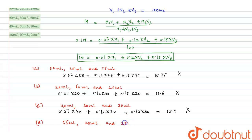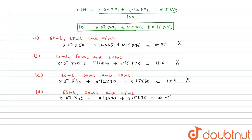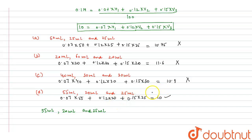Checking option D, V1=55 mL, V2=20 mL, V3=25 mL: 0.07×55 + 0.12×20 + 0.15×25 = 10. This equals 10, so option D is the correct answer. The volume of solution X is 55 mL, solution Y is 20 mL, and solution Z is 25 mL, giving a final volume of 100 mL at 0.1 molar.